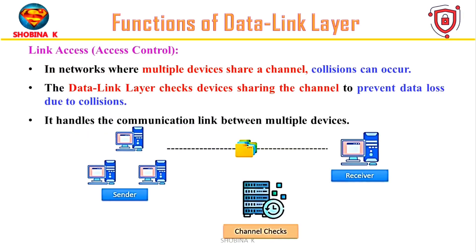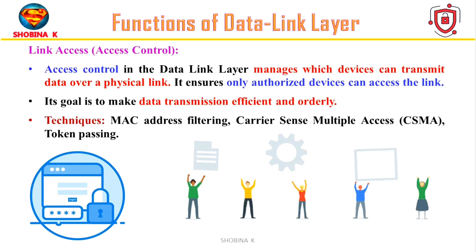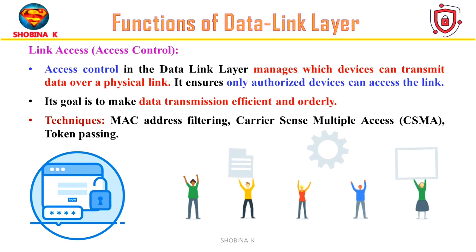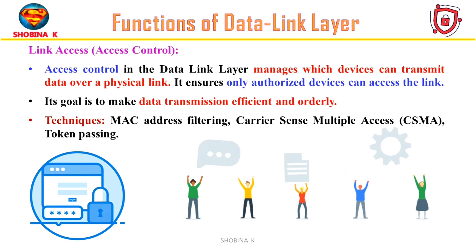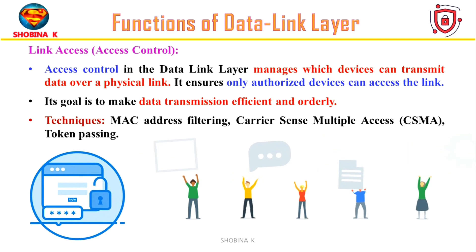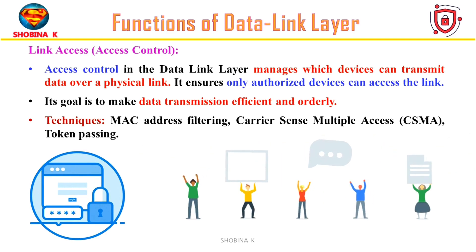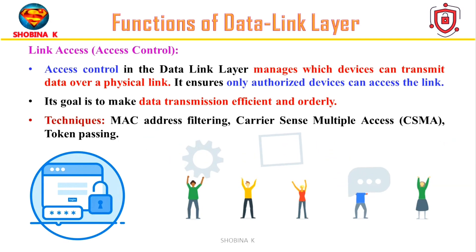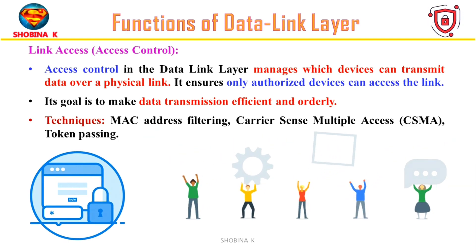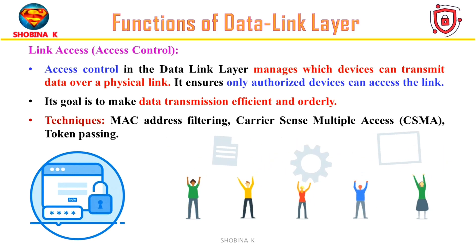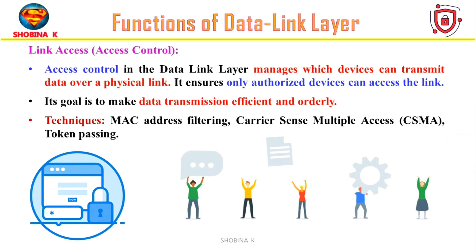The next function is access control or link access. Access control within the data link layer plays a vital role in managing communication channels shared by multiple devices. It prevents collisions by allowing only authorized devices to transmit data, ensuring smooth and efficient data transmission. Common methods include MAC address filtering, Carrier Sense Multiple Access with Collision Detection and avoidance, token passing, and Virtual LANs. These methods regulate access to network channels, making data transmission efficient and orderly while reducing the chances of collision and unauthorized access.